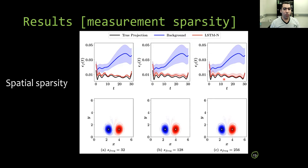Finally, we explore the effects of measurement sparsity. First, we consider the spatial sparsity. Here we use more dense data and place sensors every 32 grid points. And these two cases are more sparse or less dense data with every 128 and 256. And in all cases we are getting good performance.